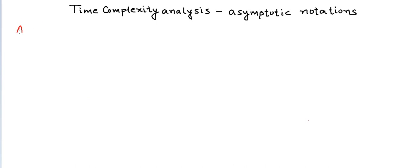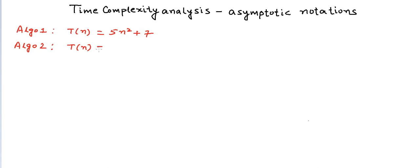Let's say we have two algorithms. Algorithm 1 has the running time defined by t(n) = 5n² + 7, where n is the input size, and Algorithm 2 has the running time defined by 17n² + 6n + 8, and let's say we have derived these expressions on a model machine.